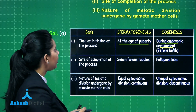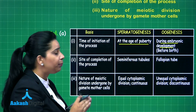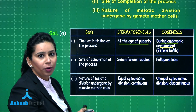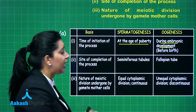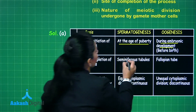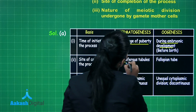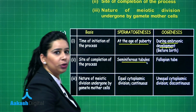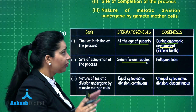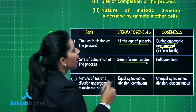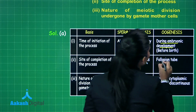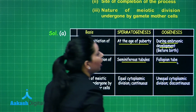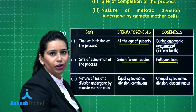The second point is site of completion of the process. The formation of sperms in males gets completed in seminiferous tubules, while in females it starts in the ovary but gets completed in the fallopian tube.